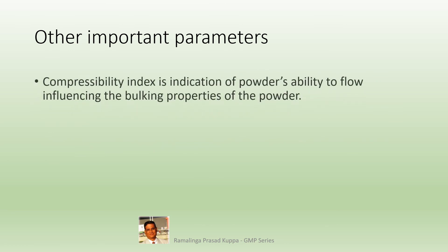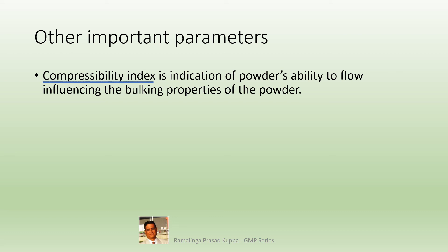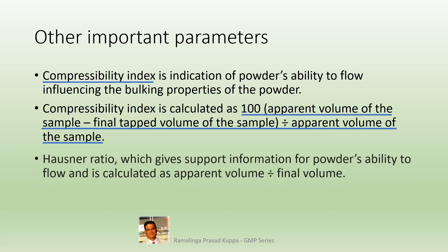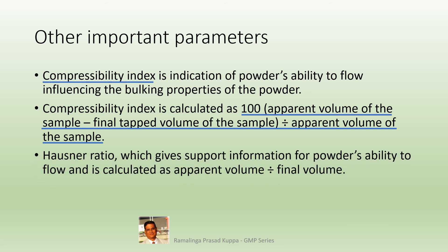Other important parameters: the Compressibility Index is an indication of a powder's ability to flow and its bulking properties, helping understand powder characteristics during compression into tablets or other dosage forms. It is calculated as: 100 × (apparent volume − final tapped volume) / apparent volume. The Hausner Ratio also provides information on powder flow and is calculated as apparent volume divided by the final tapped volume.